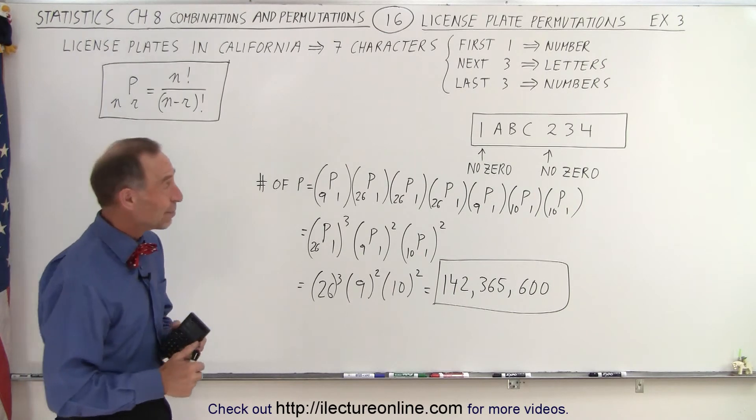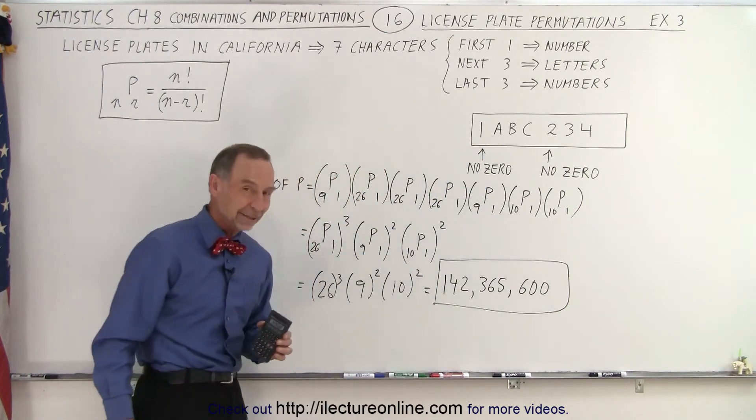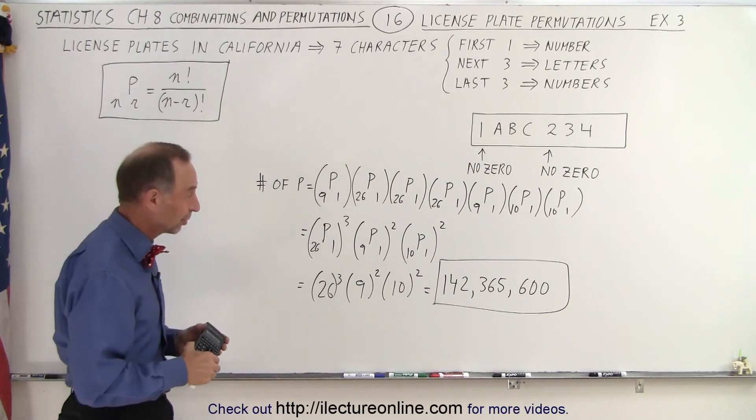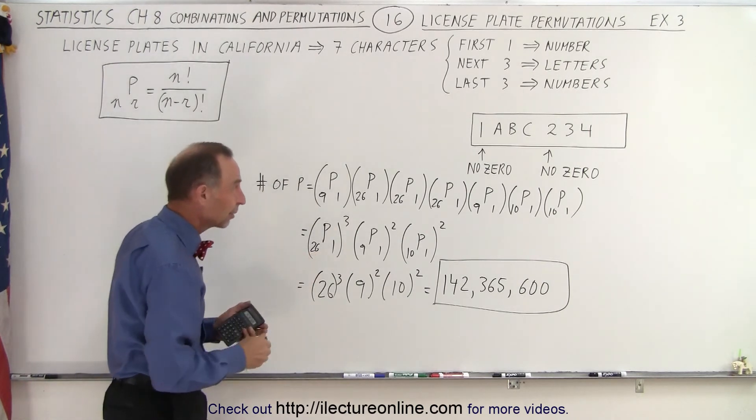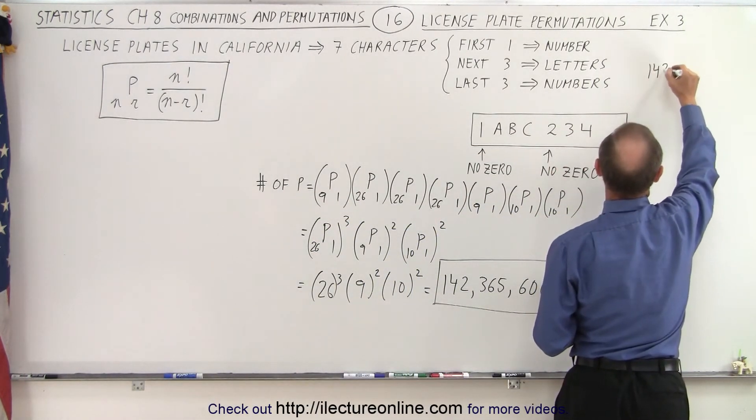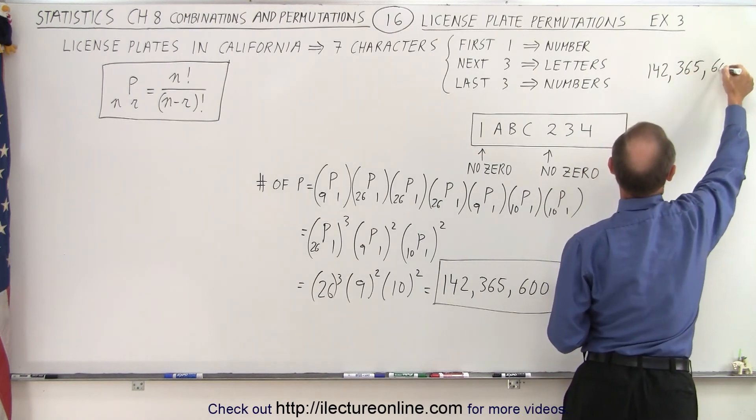Well, what was the different scheme? Well, the very first character can now also be a letter. And so that will add a whole number additional permutations. So let's keep that number handy somewhere. So we're going to write that one down: 142,365,600.